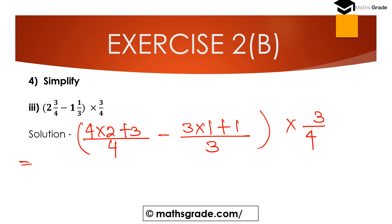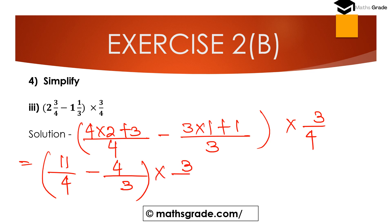So 4×2 is 8, 8 plus 3 is 11, giving 11/4. Minus 3×1 plus 1 is 4, giving 4/3, multiplied by 3/4. Now find LCM of 4 and 3, which is 12. LCM 12 divided by denominator 4 is 3, and 3 multiplied with 11 is 33. Minus LCM 12 divided by denominator 3 is 4, and 4 multiplied with numerator 4 is 16.